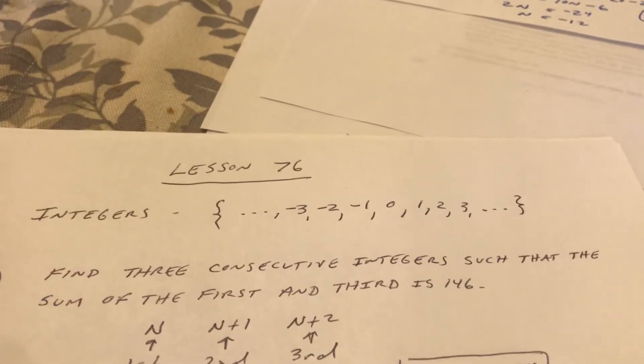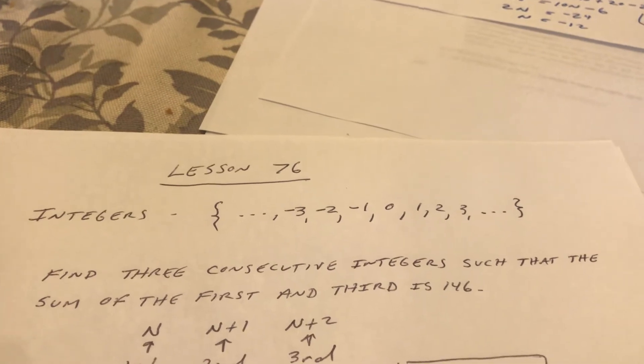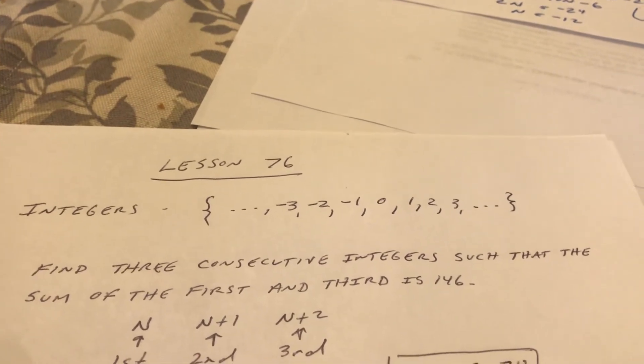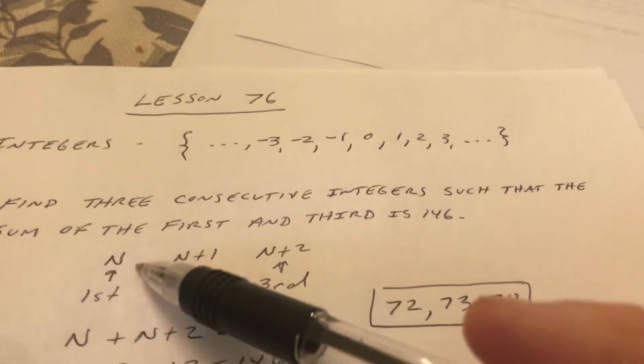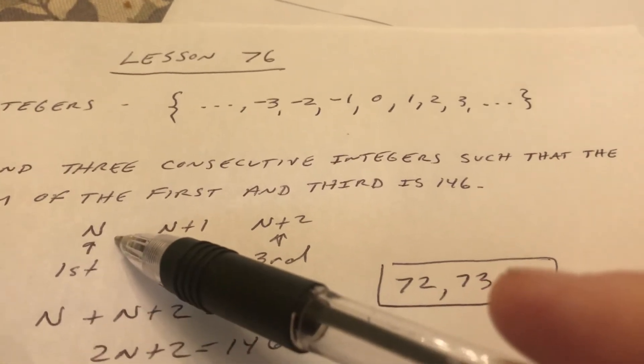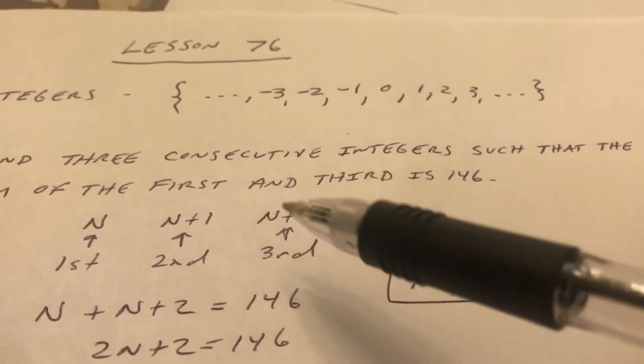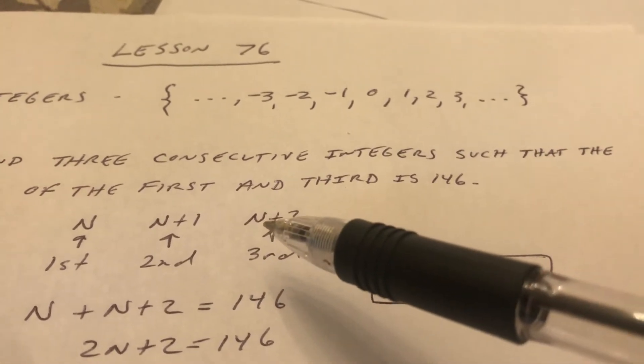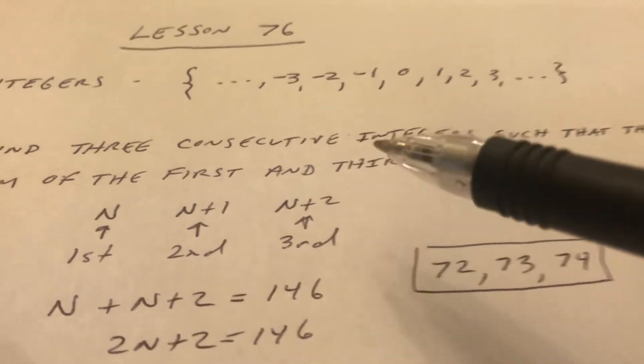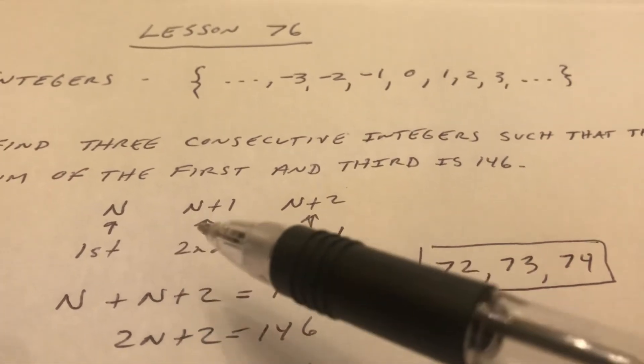So the first question says find three consecutive integers such that the sum of the first and the third is 146. Well, we let n equal the first one, so the next one must be one more than that, n plus 1, and the third one must be one more than that, n plus 1 plus 1, or n plus 2. So these are your three consecutive integers.